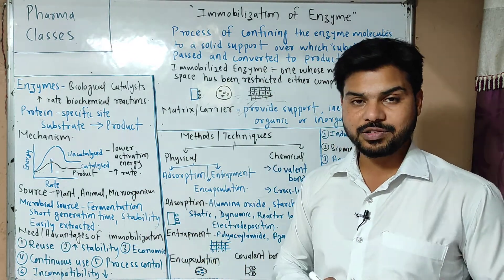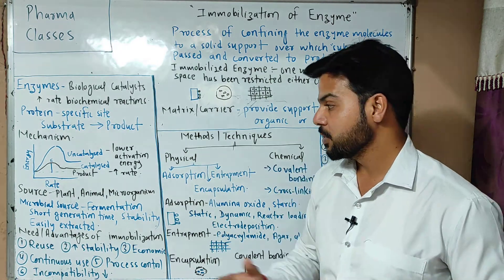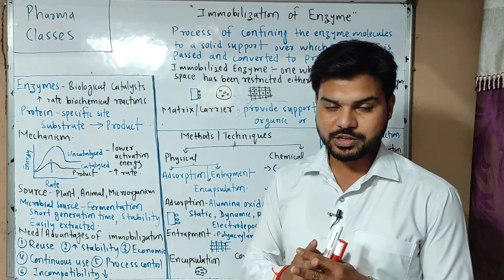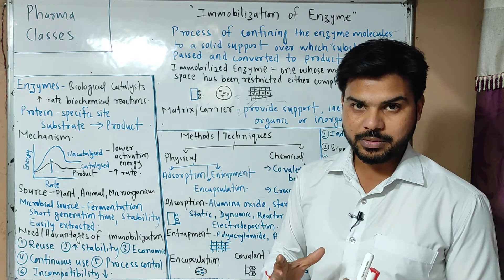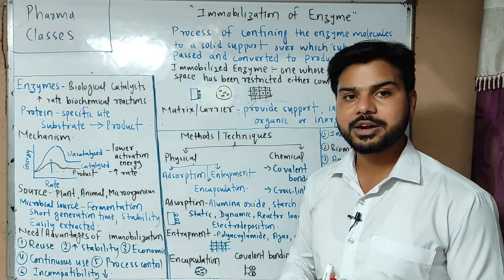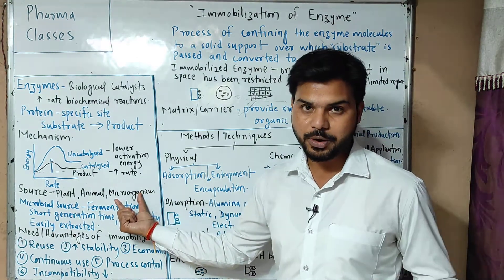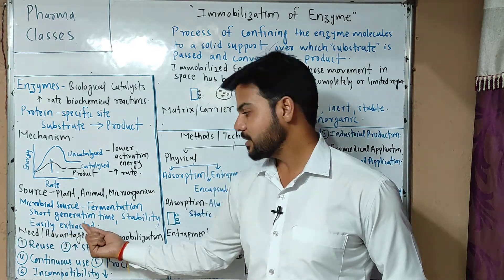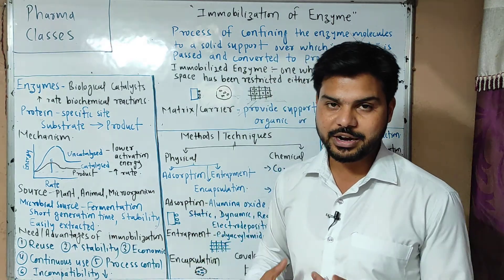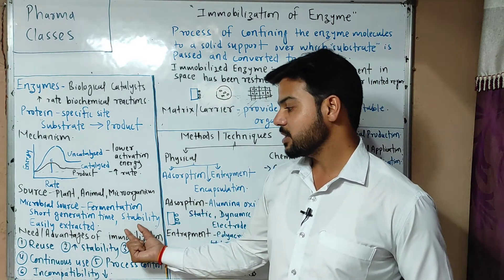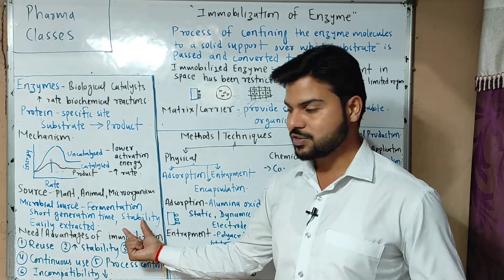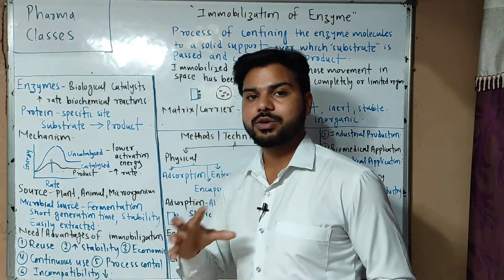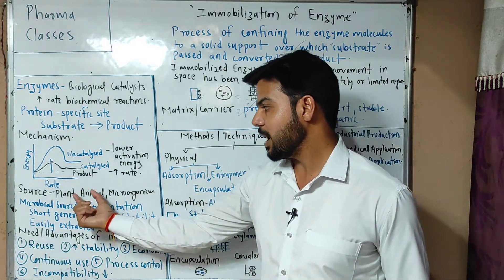Now we talk about the sources of enzymes — we can get enzymes from plants, animals, and microorganisms. After the development and advent of fermentation technology, we produce enzymes from microorganisms. Why? Because the source is very easy to generate, stability is more, variety of variations can be done, and enzymes can be easily extracted as compared to plants and animals.